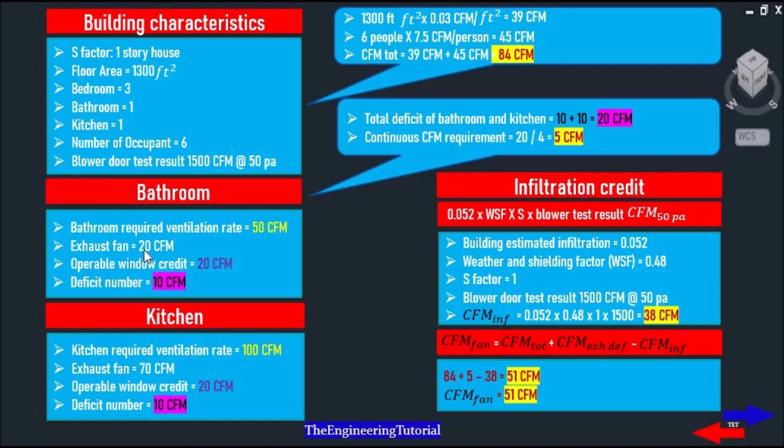And the bathroom required ventilation rate is 50 CFM. The exhaust fan can only provide 20 CFM. There is an operable window that gives us a 20 CFM credit and the deficit number is 10 CFM. The kitchen required ventilation rate is 100 CFM, the exhaust fan is 70 CFM, operable window credit is 20 CFM. The total deficit of bathroom and kitchen 10 plus 20 equals 30 CFM to convert to continuous CFM requirement. We divide 30 by 4 that gives us 7.5 CFM of continuous ventilation rate.